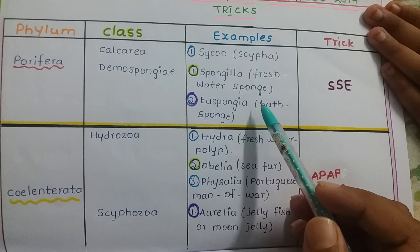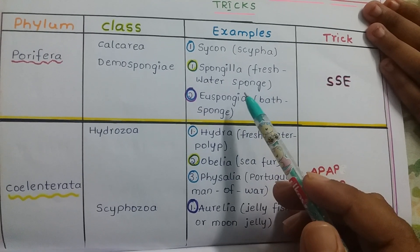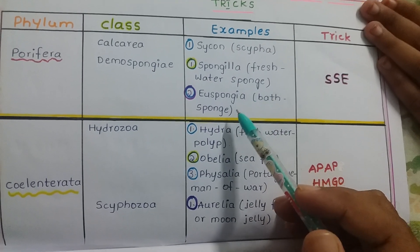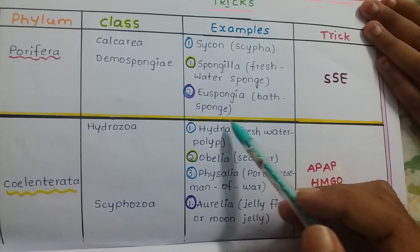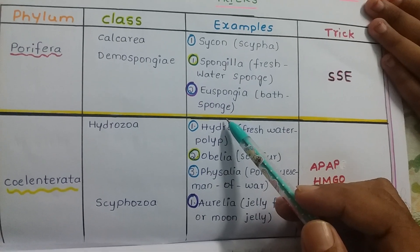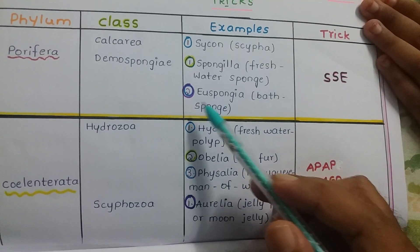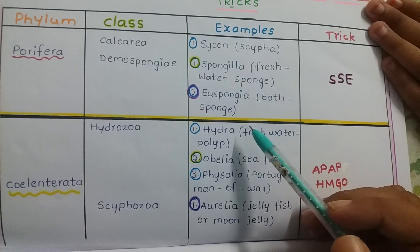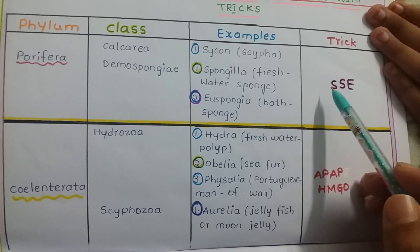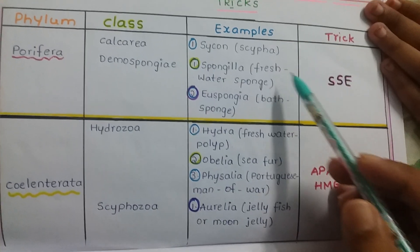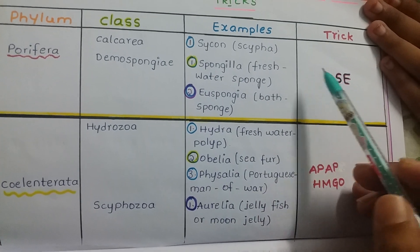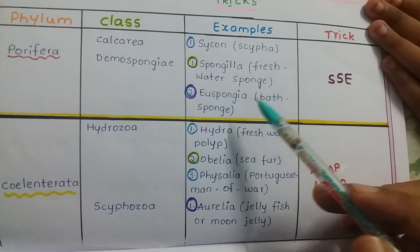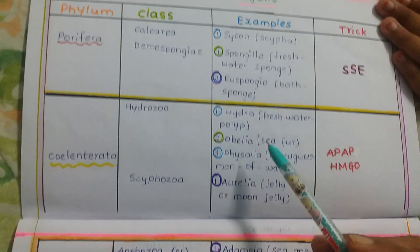Euspongia — you are taking a bath with Euspongia, so it is the bath sponge. To recap, the trick is SSC: S for Sycon, S for Spongilla, E for Euspongia. Now move on to the next phylum.